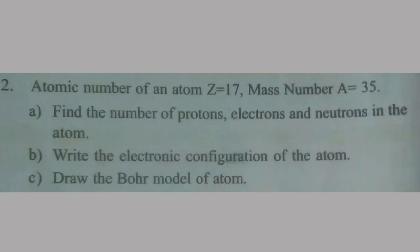The second question is: atomic number Z is equal to 17, mass number is equal to 35. Find the number of protons, number of electrons, and number of neutrons.